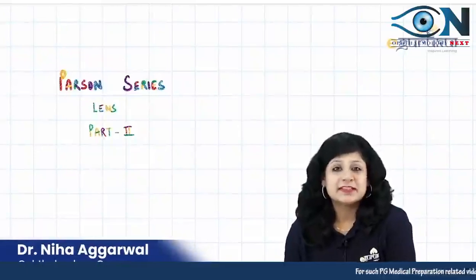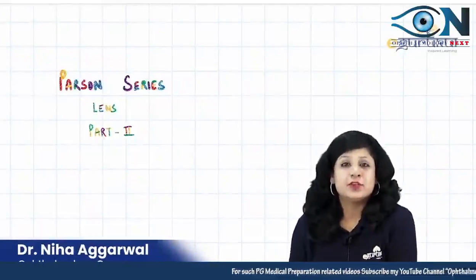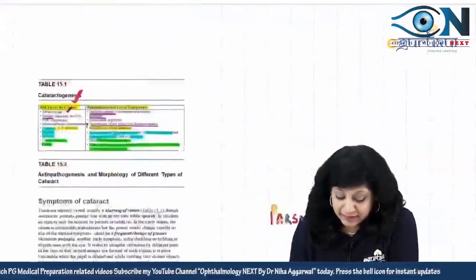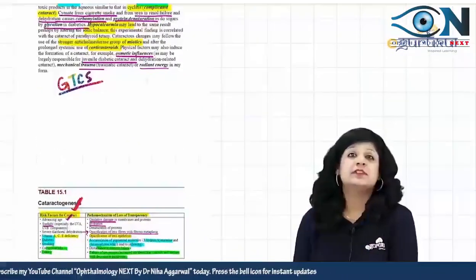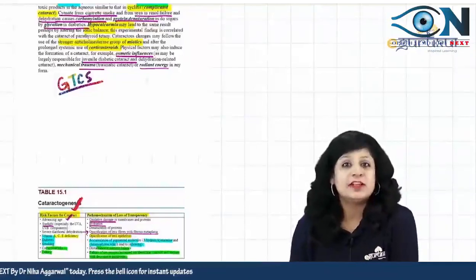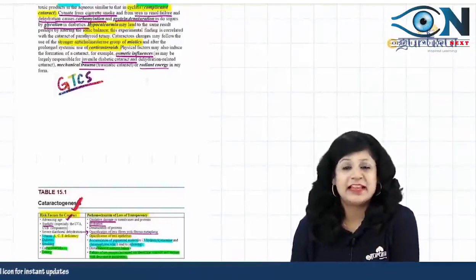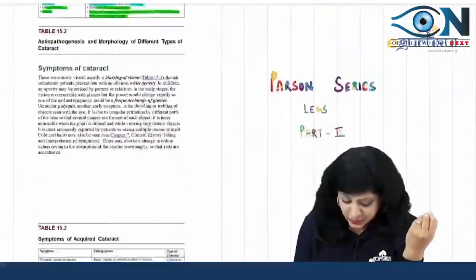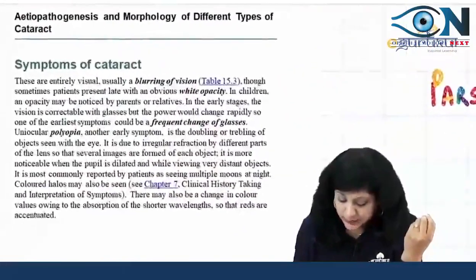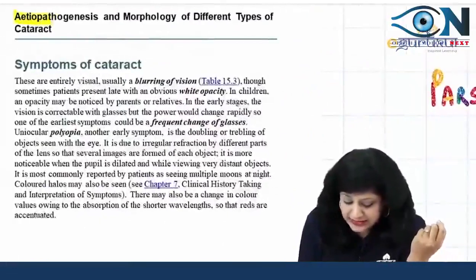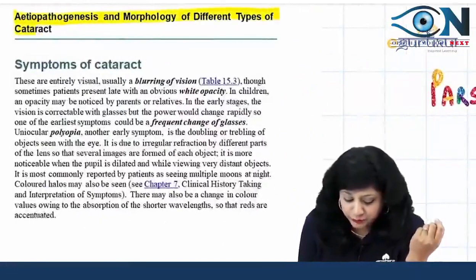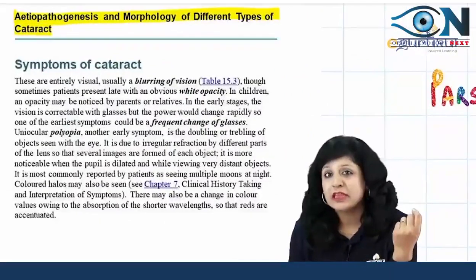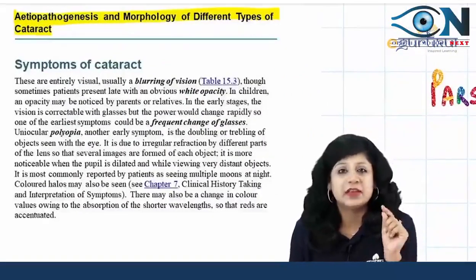Hello guys, welcome to the Parsons series. Today we will be continuing with the discussion of the lens. If you remember, last time we saw some amazing concepts about the anatomy, physiology and biochemistry of the lens, how cataract occurs. Today we are starting with the etiopathogenesis and morphology of the different types of cataract. I hope all of you are enjoying reading Parsons latest edition, 23rd.